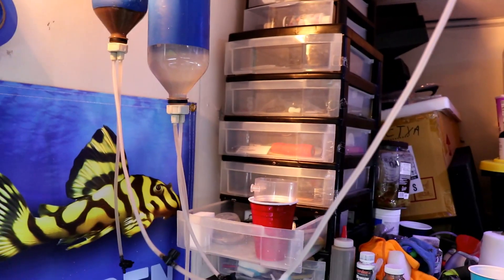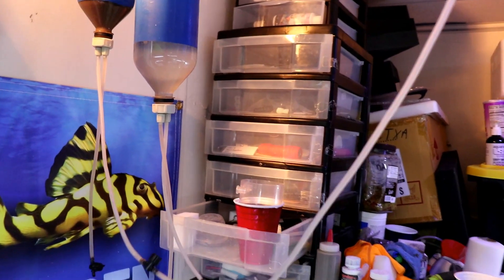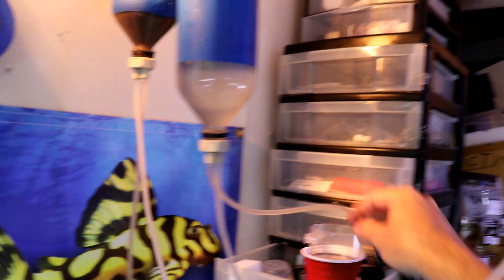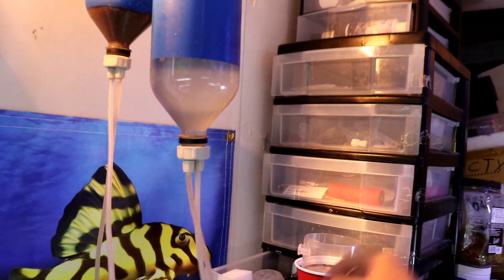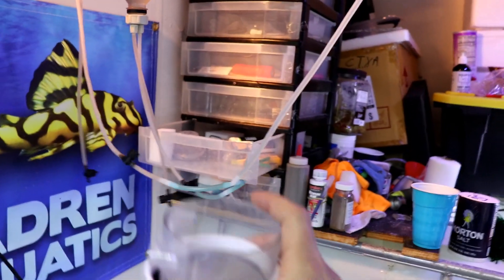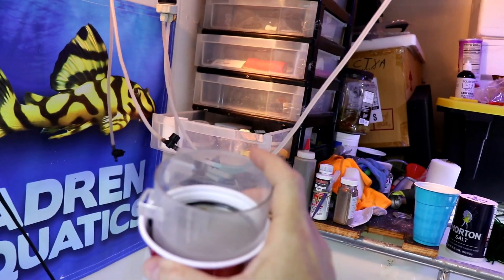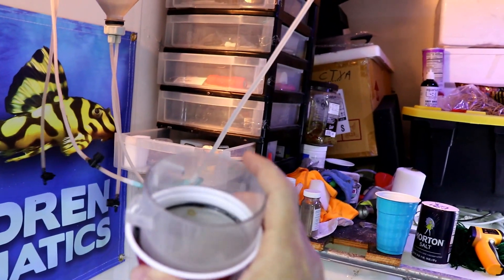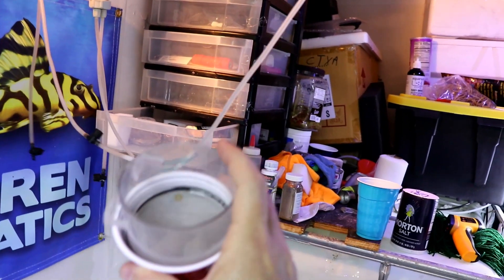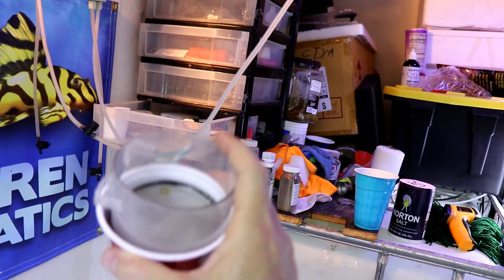Once you have it in here, now you need to get that salt off of it. So what I use is a turkey baster and I shoot this thing full of water about four or five times, and that way I'm washing all that salt off.